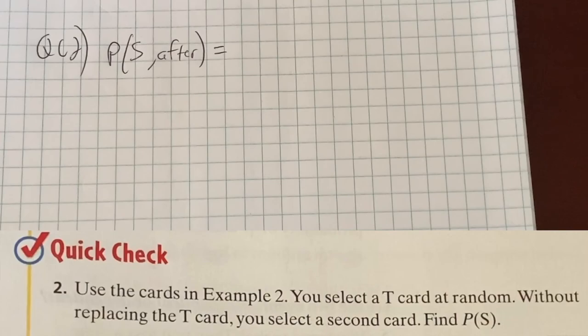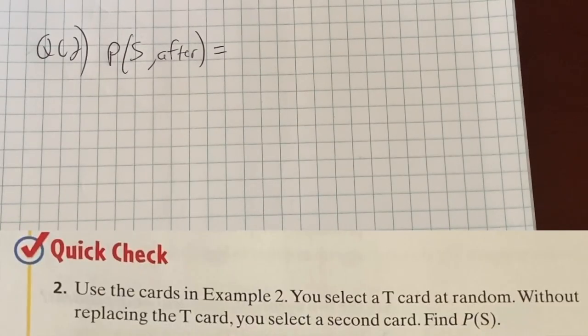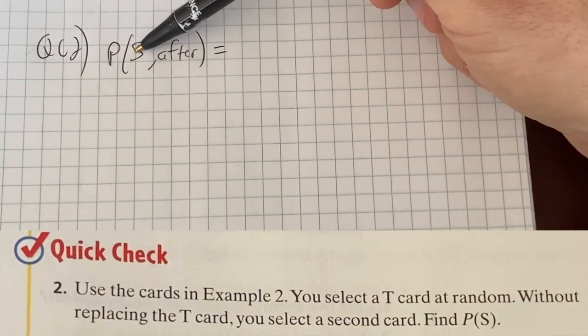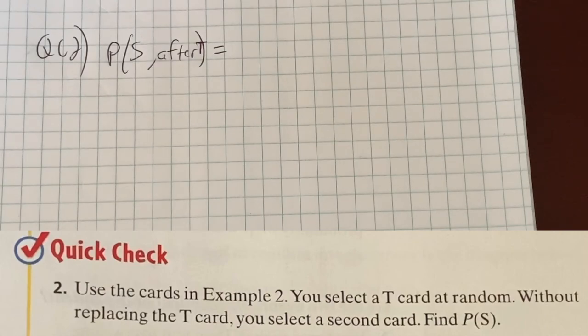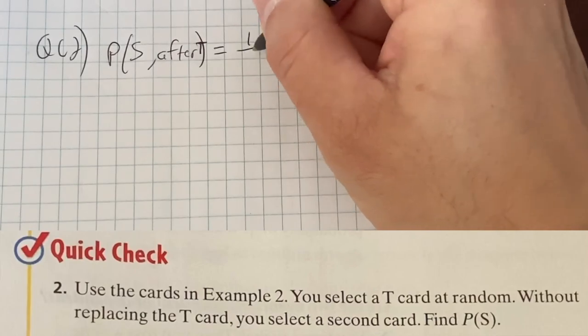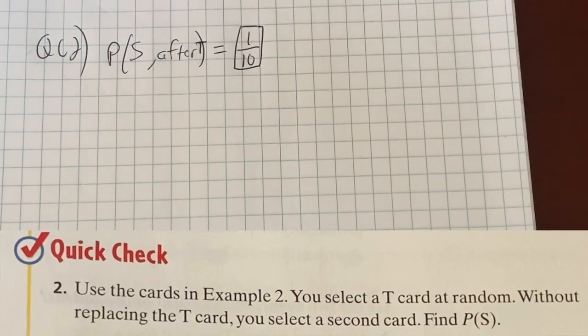So quick check number two is we're using the same cards from example two. So that's the mathematics one. We select a T. Without replacing it, what's the probability that you will now get an S? An S after a T. If one of those T's is gone, now we have 10 cards remaining. How many of them are an S? Only one out of the 10 is an S. This probability would be one out of 10. One S out of the 10 remaining cards after the T is gone.